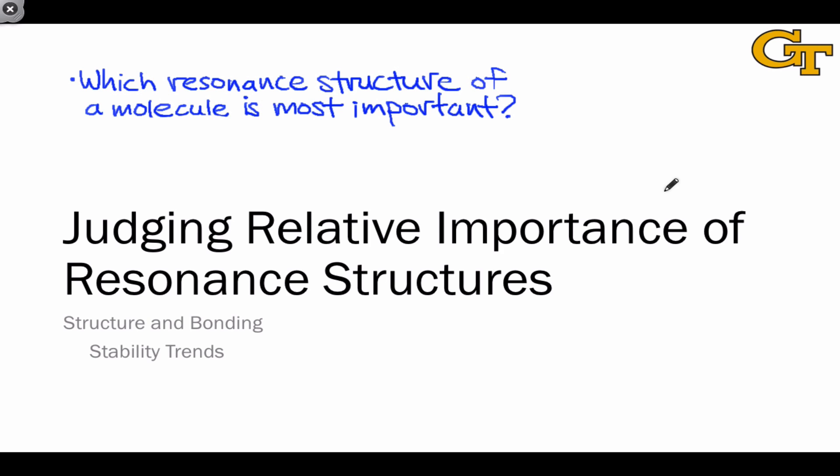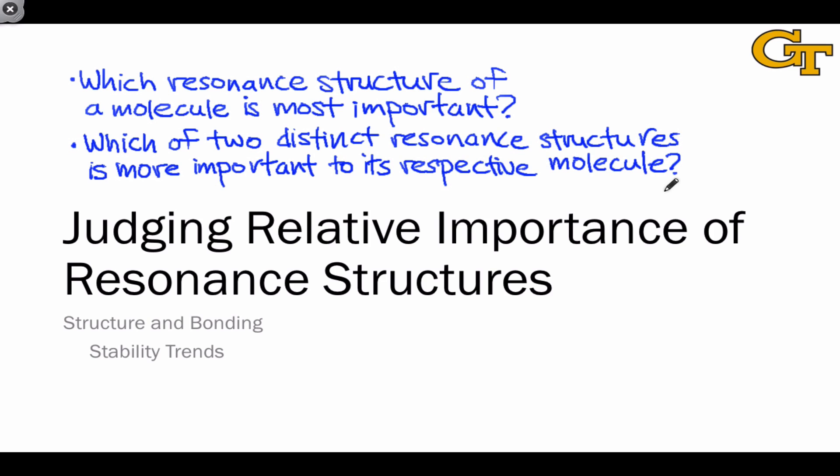Given a single true molecule, which resonance structure of that molecule is most important? And the related but different question: which of two distinct resonance structures is more important to its respective molecule, where the true molecules and the resonance structures are structurally related, but they don't correspond to the same true molecule.